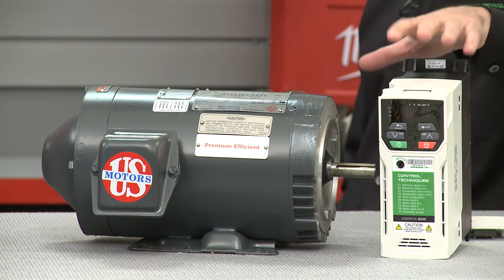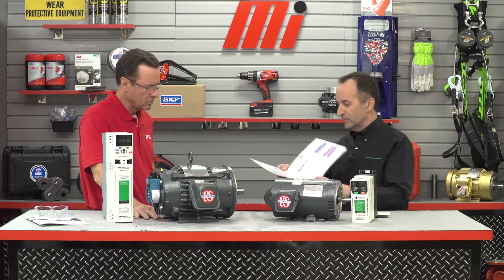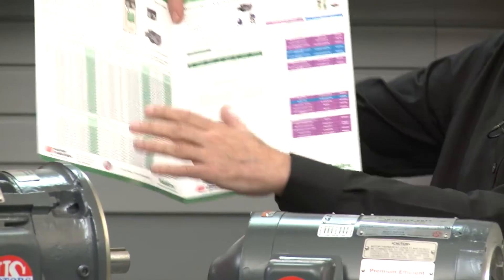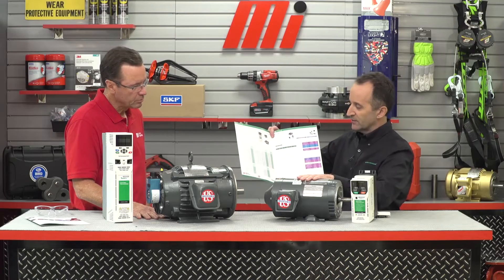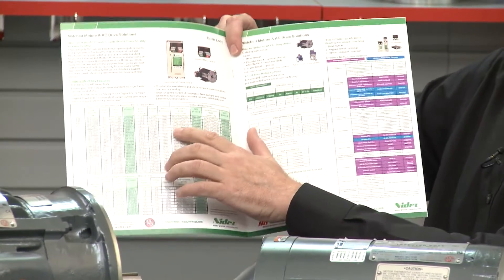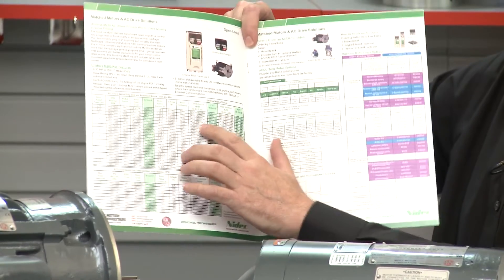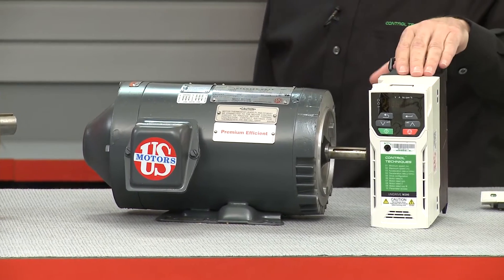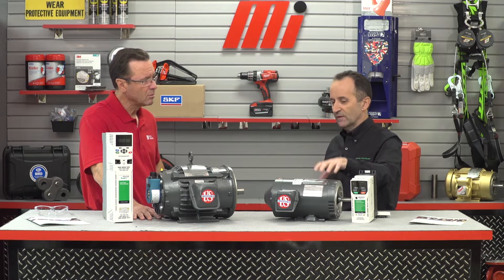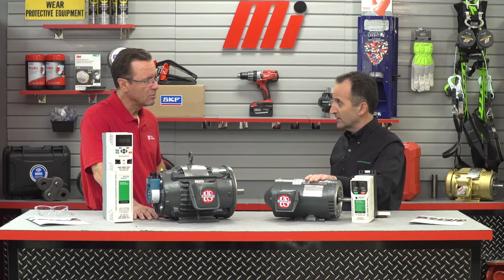Our most popular model is this Unidrive M200 VFD. To make life easy, we've created a simple selection flyer which has matched motors and VFDs. Once you've selected your motor, you look across the row and pick the appropriate VFD based on voltage. In this case we have a 3.4 amp motor and a 4.2 amp VFD, so this combination will work. An important note: to get the best value, always work off of the motor nameplate current and size the VFD on that rather than motor horsepower.